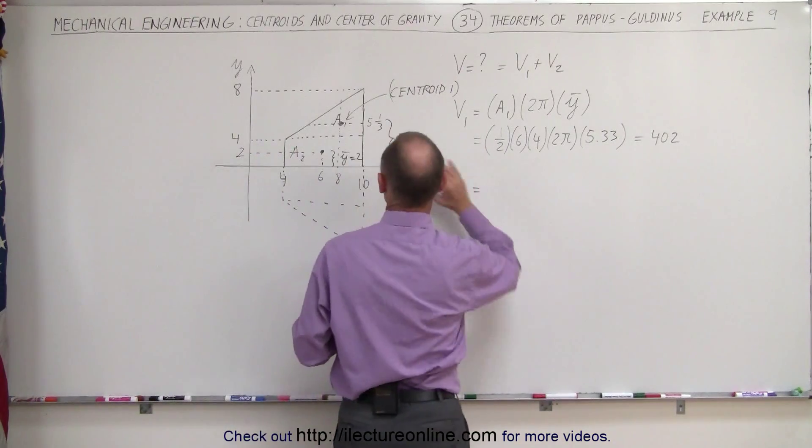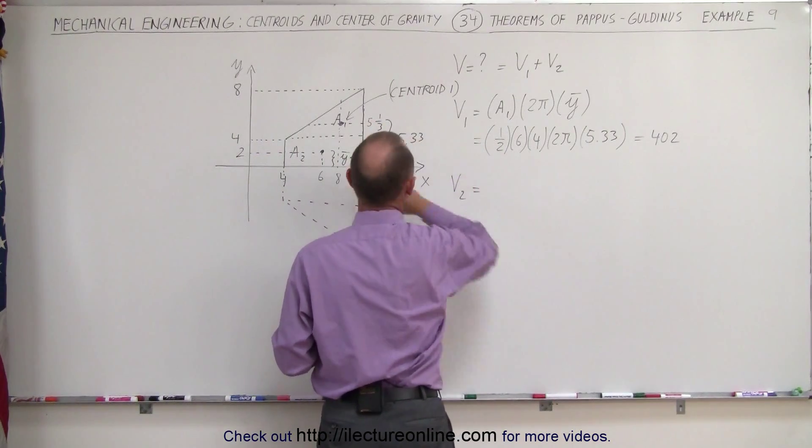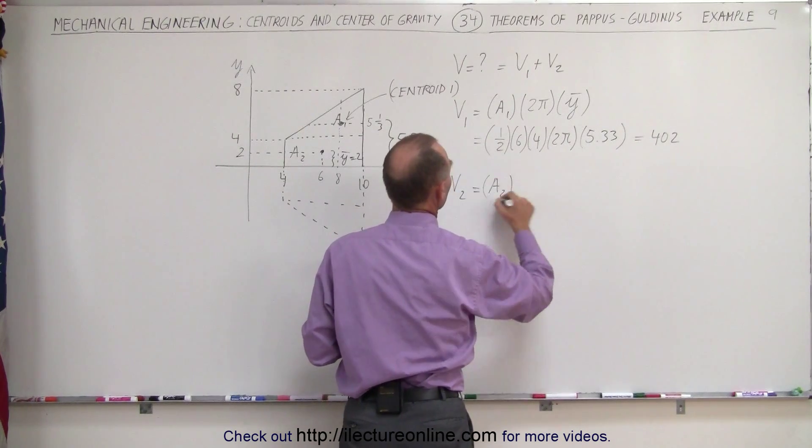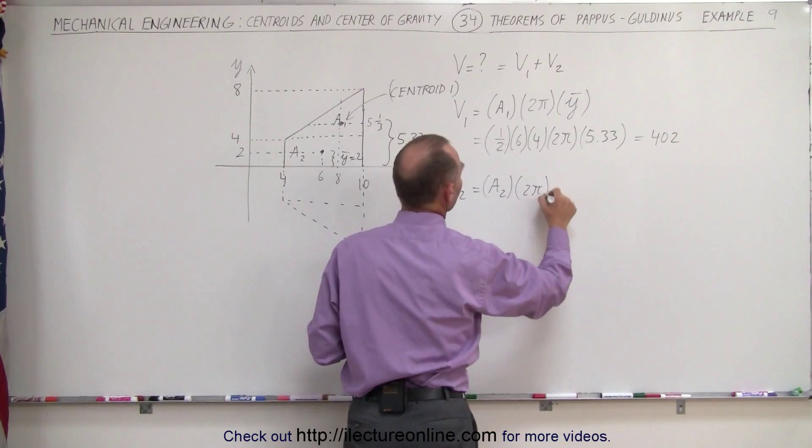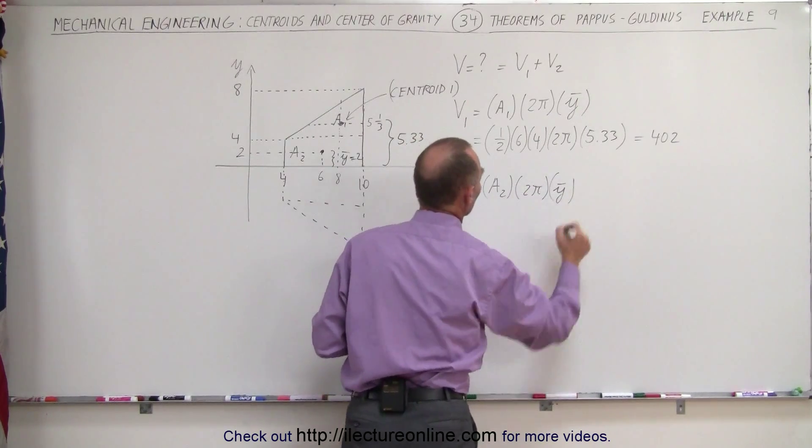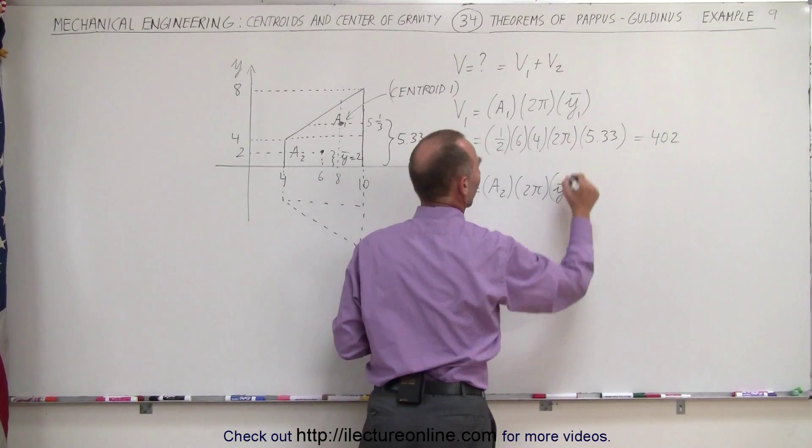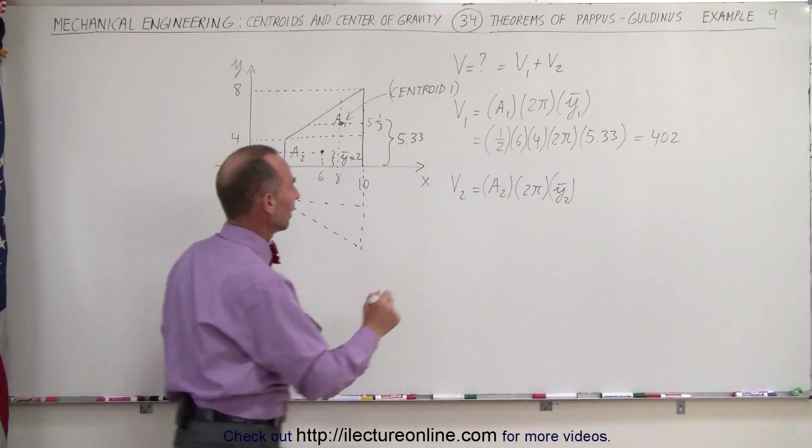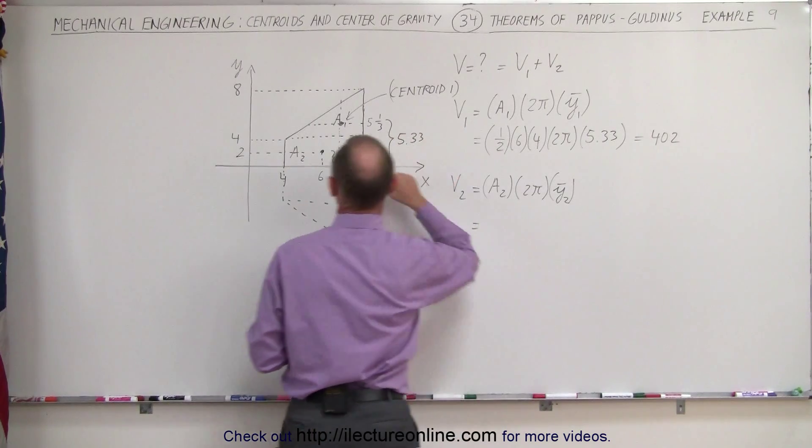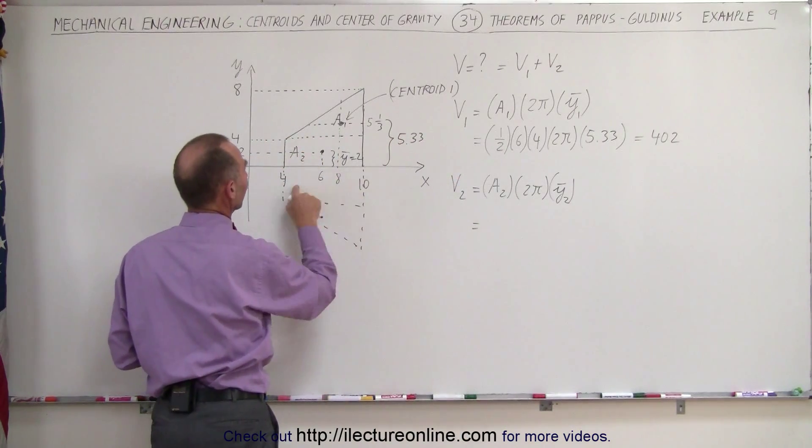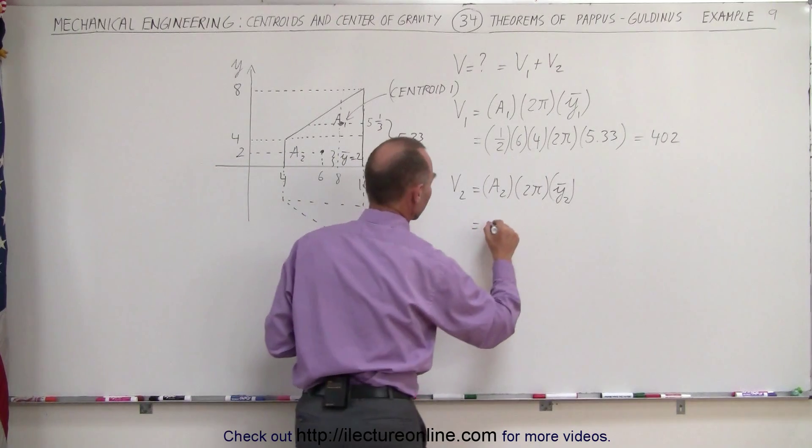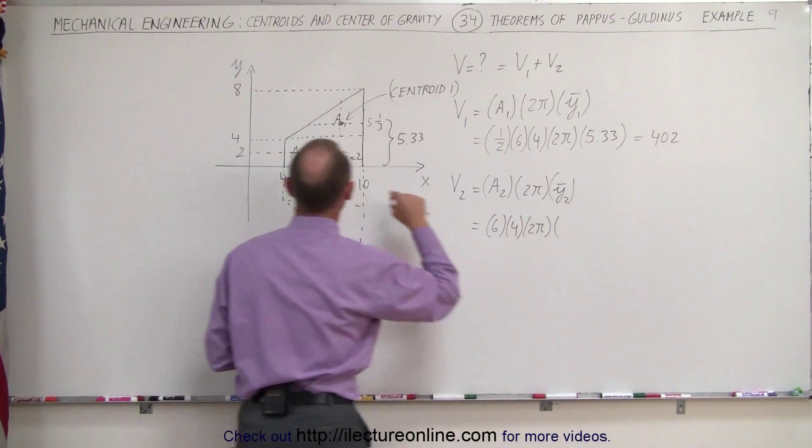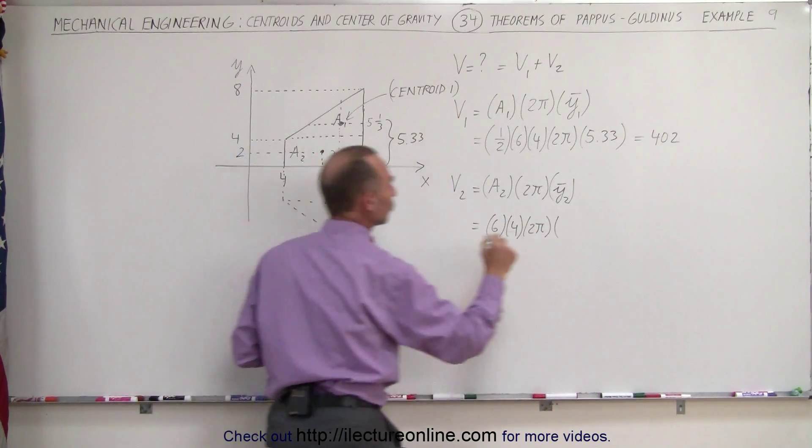So now we find the volume of the cylinder portion of the truncated cone. Area 2 times 2π times the distance to the centroid. Let's call this y1 and y2, that way we don't confuse those, that they're not the same. The area of this portion right here, that would be the width, which is 6, times the height, which is 4. That's 6 times 4 times 2π times the distance to the centroid, which would be 2.